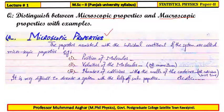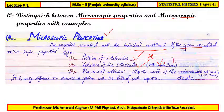Microscopic properties are the properties which are associated with the individual constituents of the system. For example: position of the molecule (x), velocity of the molecule, momentum of the molecule, and number of collisions with the walls of the container, etc. It is very difficult to describe a system using such properties.